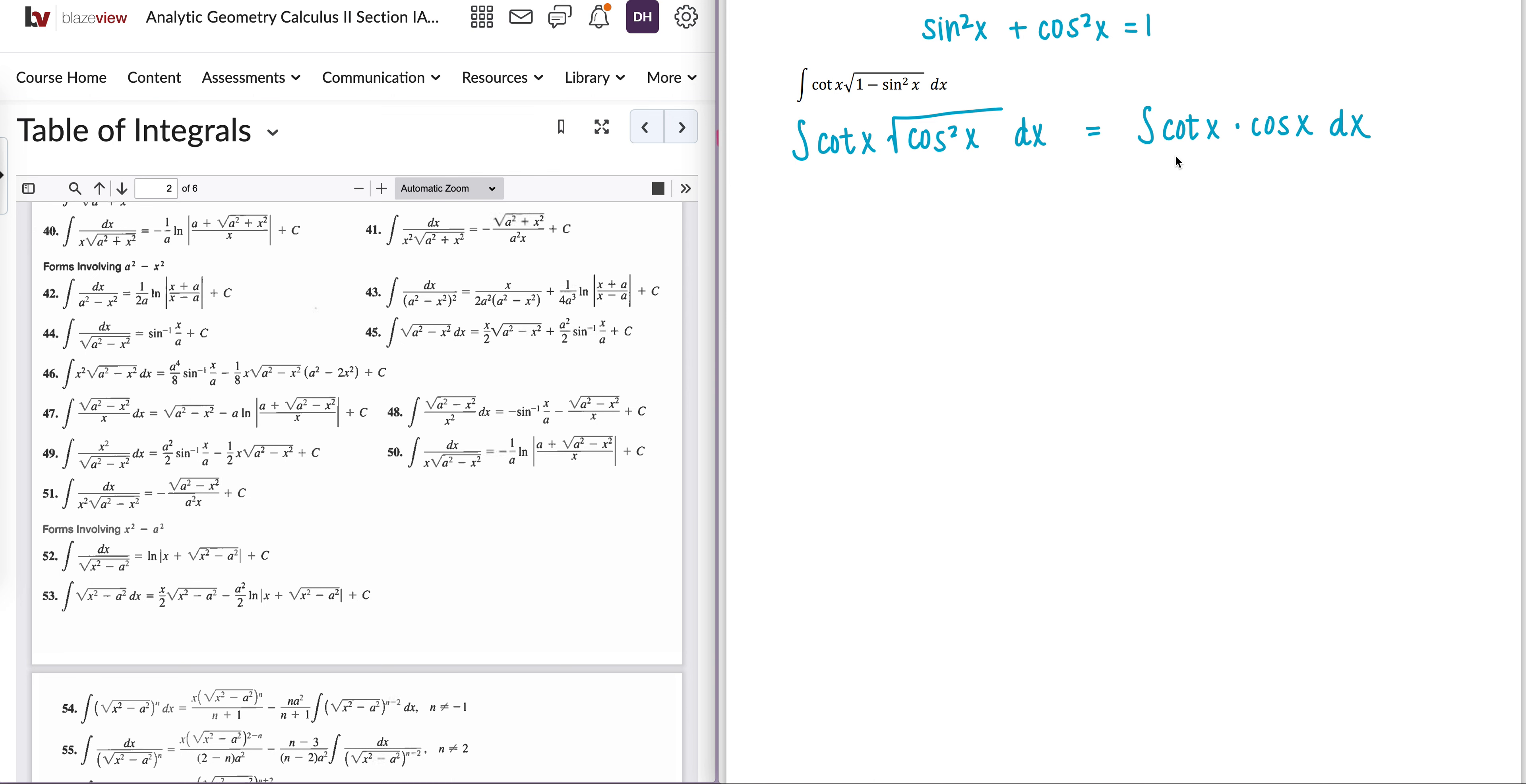What I am now going to do is I'm going to rewrite cotangent x as cosine x over sine x, and that's times cosine x dx. Then I'm going to multiply, so I get cosine squared x over sine x dx.